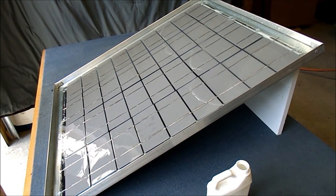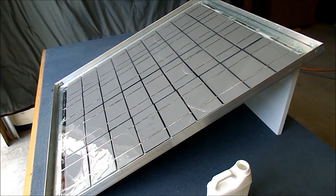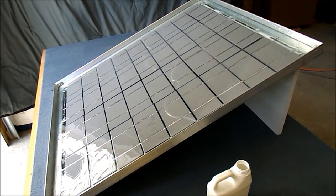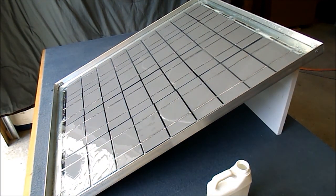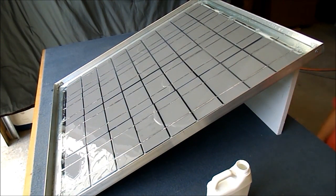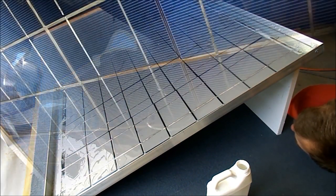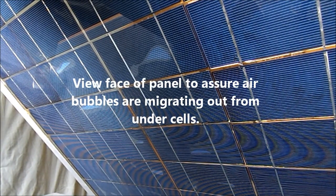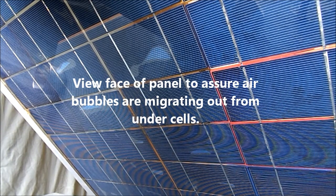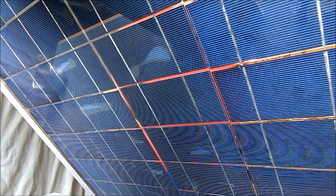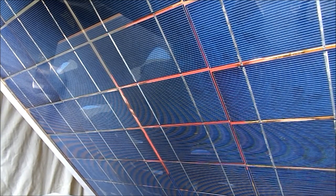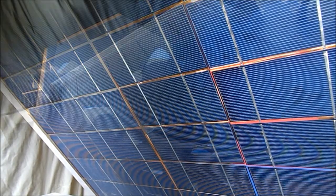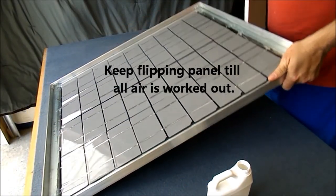You may have to repeat this step several times to get complete air removal from between the cells and the glass. Be patient as the air slowly escapes the cells. As you can see in the video, there are several spots of air still left between the cell and the glass, so we will keep repeating this step until all the air has been removed.